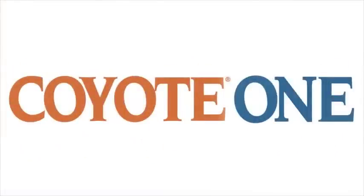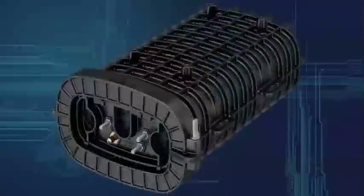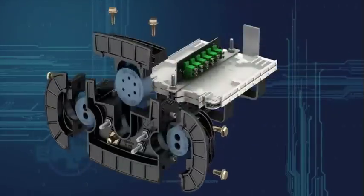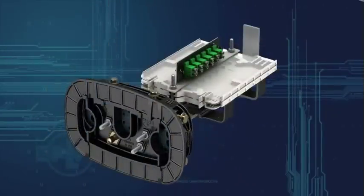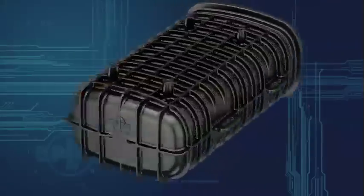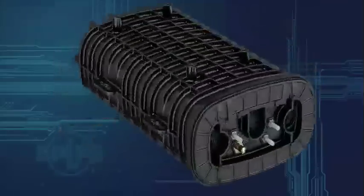Introducing the Coyote One closure from Preformed Line Products. The closure's compact size, hinge collar system, and innovative patented segmented end plate design make this new closure the only one to choose. The Coyote One can be configured with three different fiber organizers.